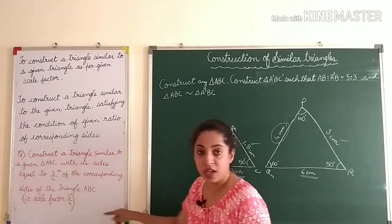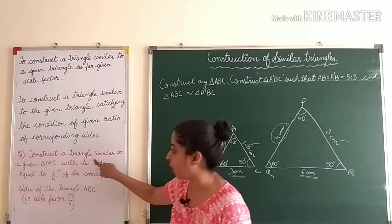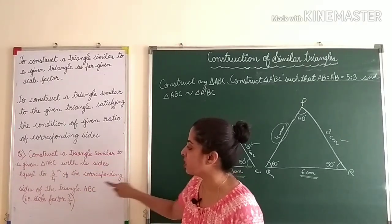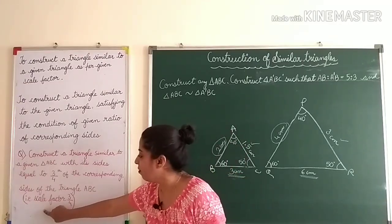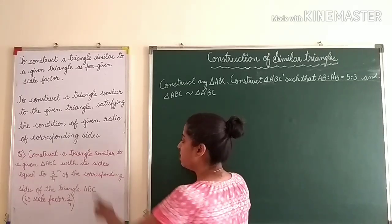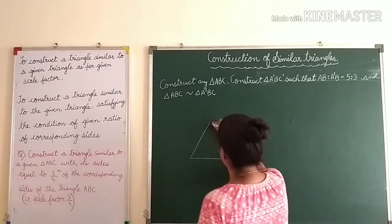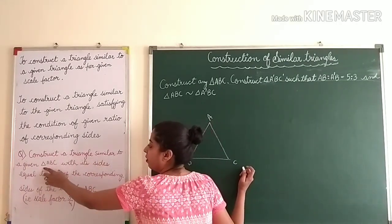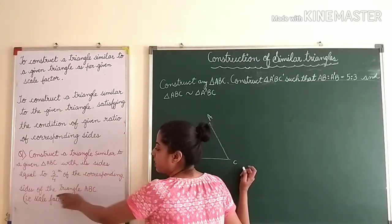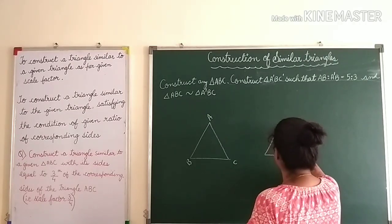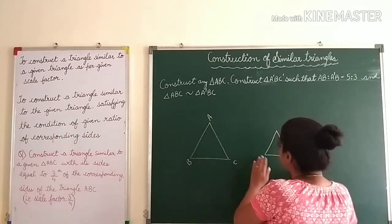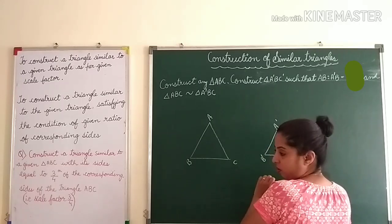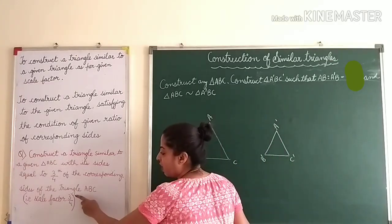Read the question very carefully. For example: 'Construct a triangle similar to a given triangle ABC with its sides equal to three-fourths of the corresponding sides of triangle ABC.' That is, the scale factor is 3/4. It means the new triangle A'B'C' that you are going to draw should have sides that are three-fourths of the given triangle — so the new triangle is smaller than the old one.